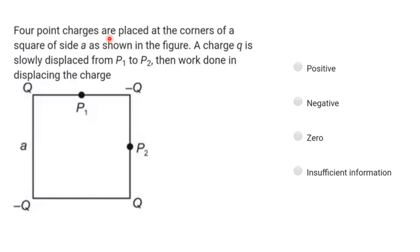Four point charges are placed at the corners of a square of side A as shown in the figure. The charges alternate as plus-q, minus-q, plus-q, and minus-q at the four corners. A small charge q is slowly displaced from P1 to P2.